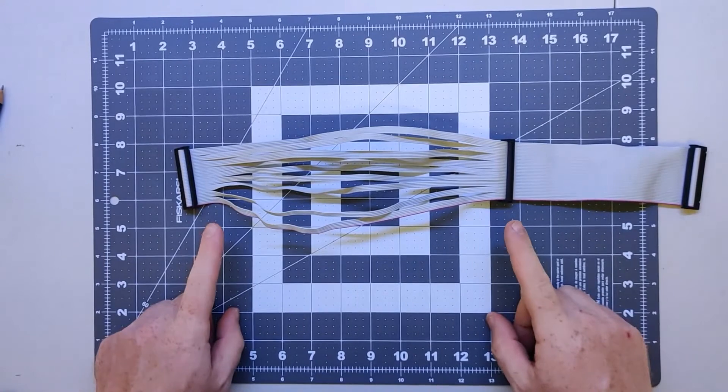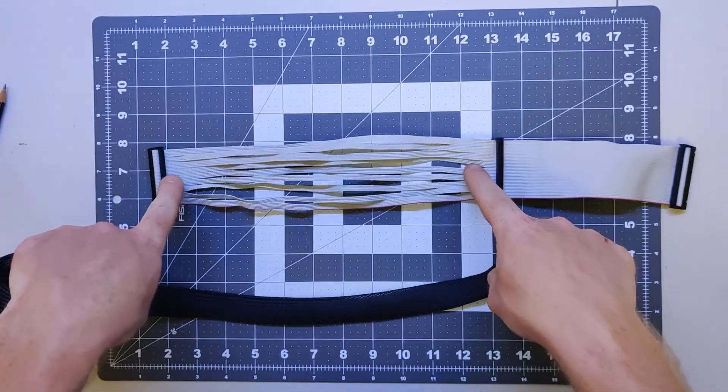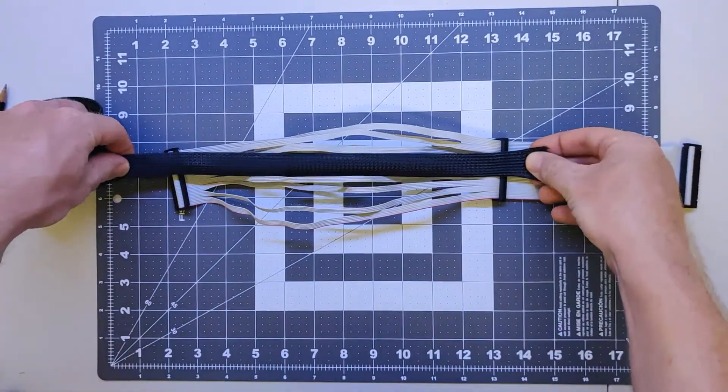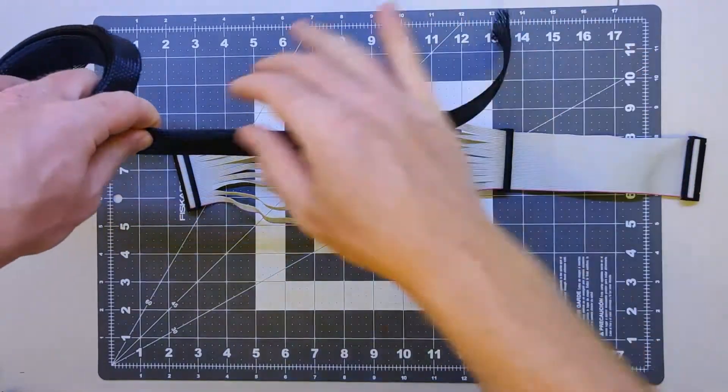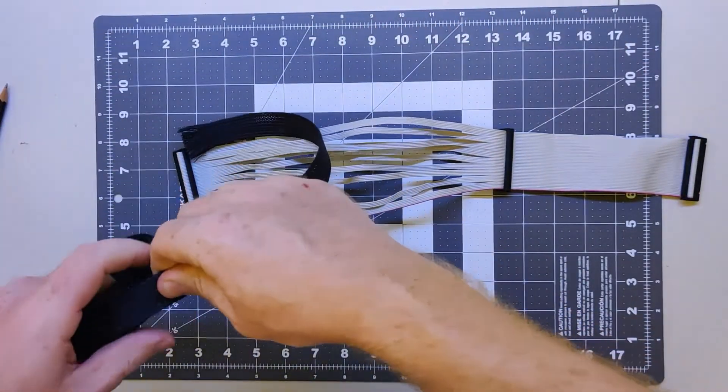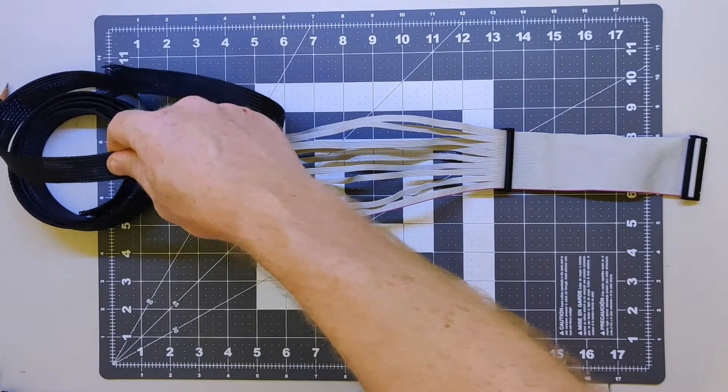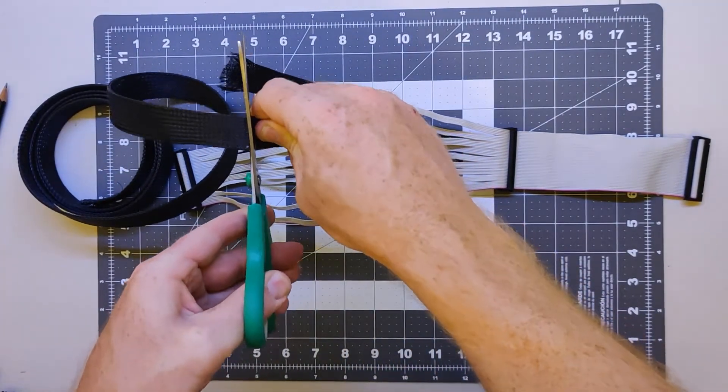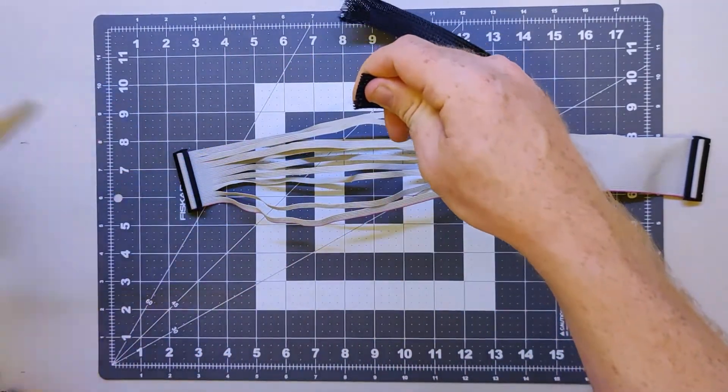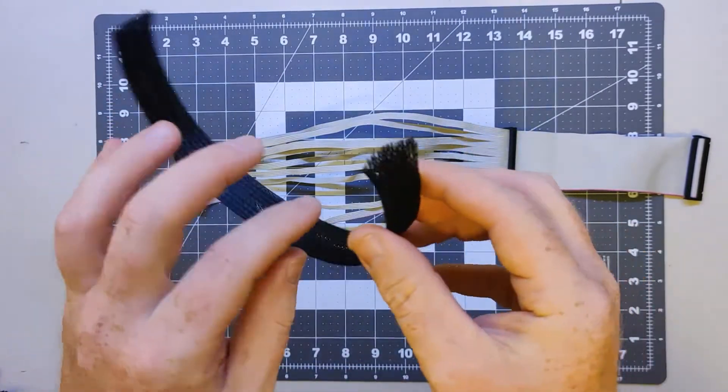The next step is the sheathing. Take a length of your sheathing and measure a piece that is longer than the distance between the two connectors of the cable, about an inch longer on each side. When you have that, take your scissors and cut that length of sheathing.